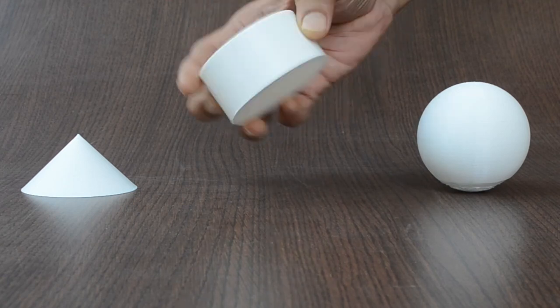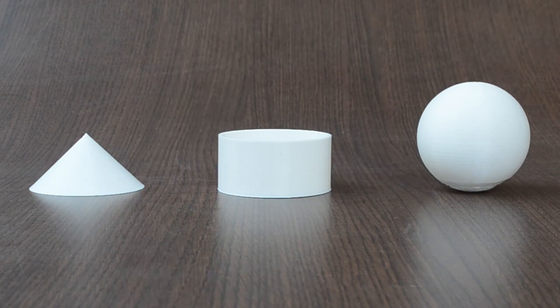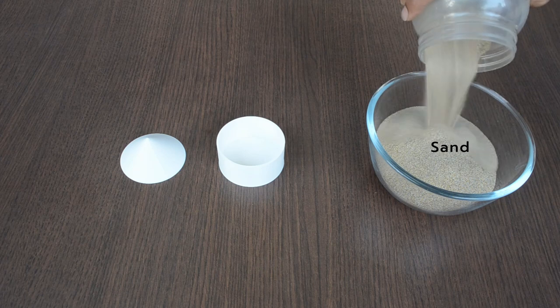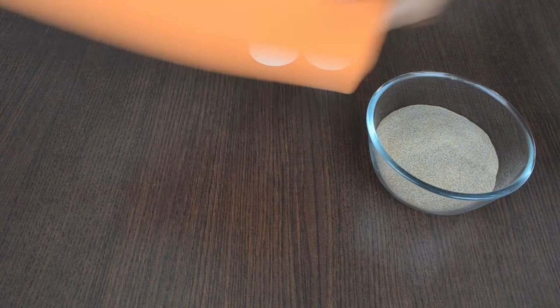Radius of all the shapes is same, and height and radius of the cone are equal. We will use sand to fill each container. Let us place these on a paper.